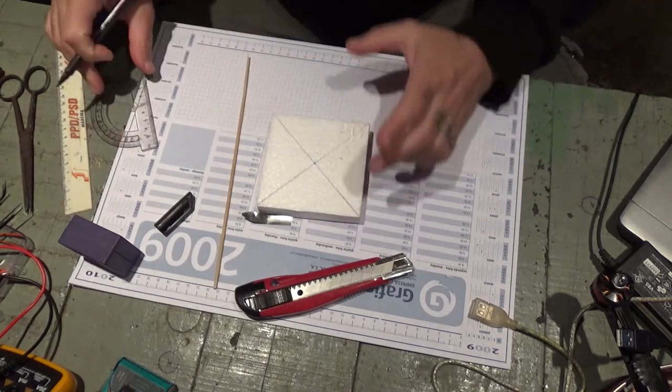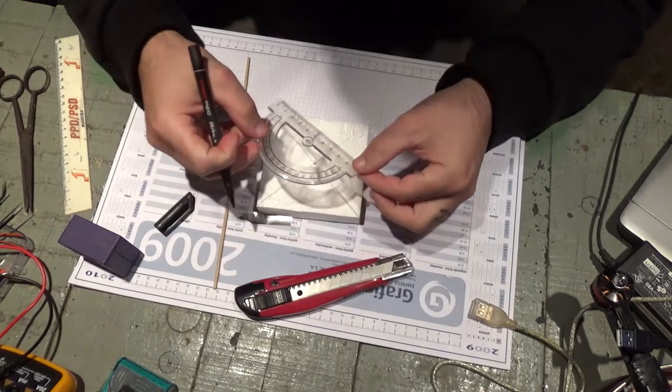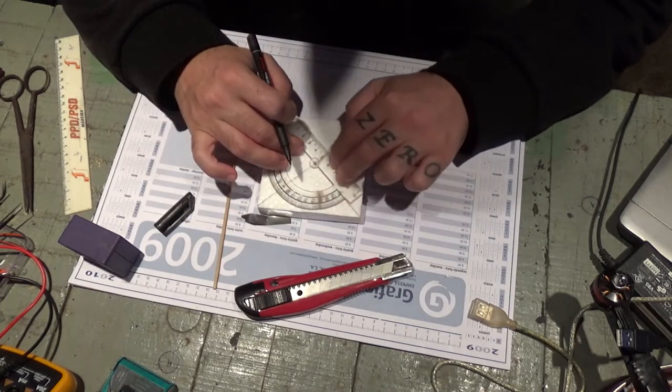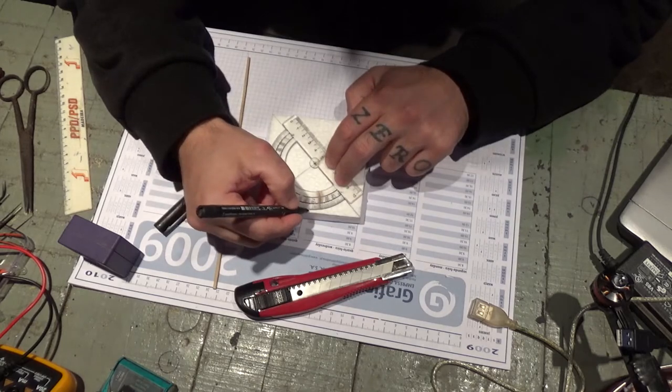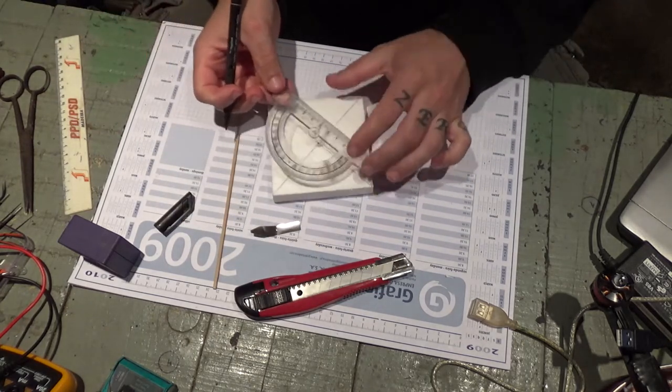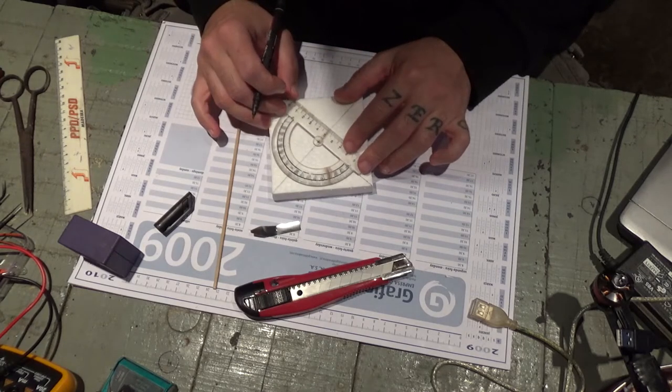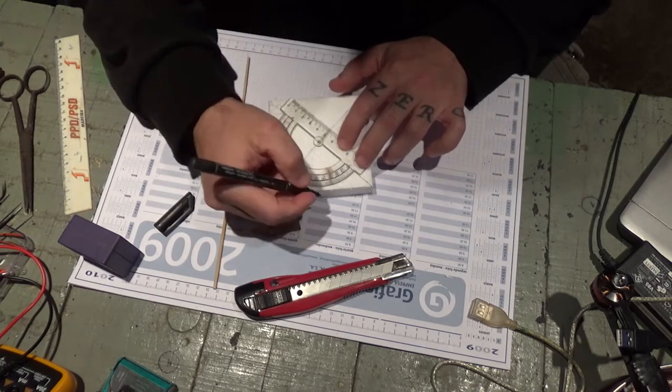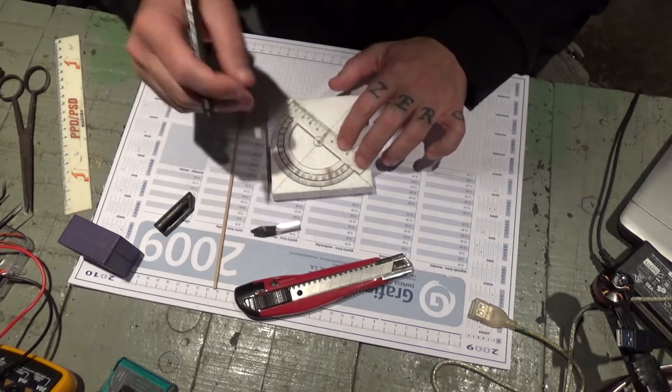Once you got the middle point, you're gonna pick this one up, you're gonna set it on the middle point, like so, and you're gonna measure here 45 degrees. And then on the other side, you're gonna do the same, you're gonna put it here, right in the middle hole, and you're gonna measure 45 degrees.